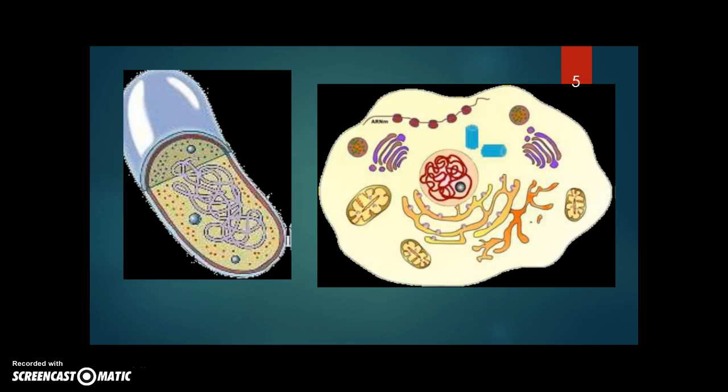In this slide, we can see two images from a prokaryotic cell and from a eukaryotic cell. Prokaryotic cells are smaller, more simple. The DNA is not surrounded by a nuclear envelope. And they don't have any organelle. On the other hand, eukaryotic cells are bigger, they are more complex. The DNA is surrounded by a nuclear membrane, and they have organelles.